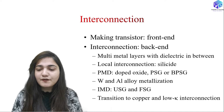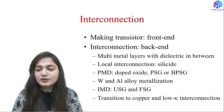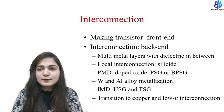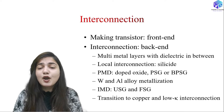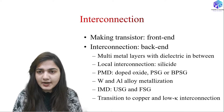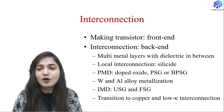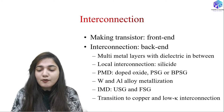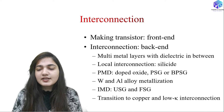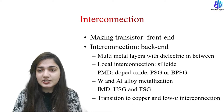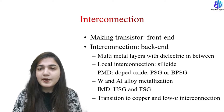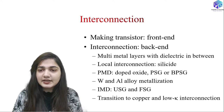We can form local interconnection with the help of silicide. For the pre-metallic dielectric we can use doped oxide, phosphosilicate glass, or borophosphosilicate glass. We can use tungsten and aluminium alloy for metallization — either aluminium-silicon alloy or aluminium-silicon-copper alloy. For the inter-metallic dielectric we can use undoped silicate glass and fluorosilicate glass. We are also moving towards copper and low dielectric constant interconnections, which are the technology of the future and will be discussed in the next video separately.